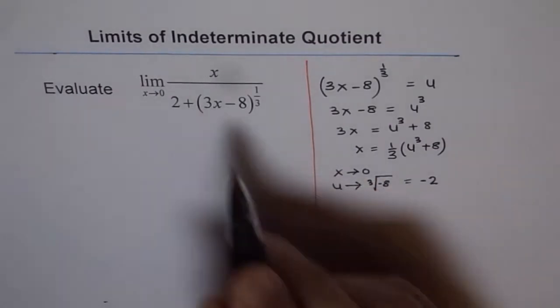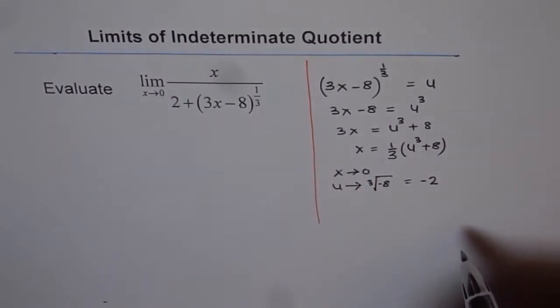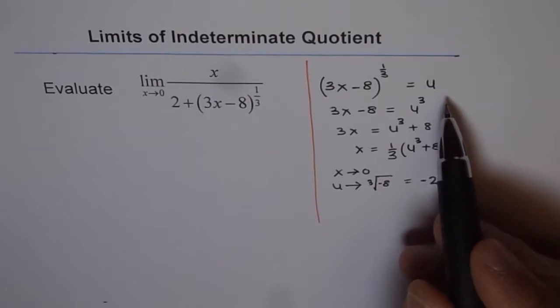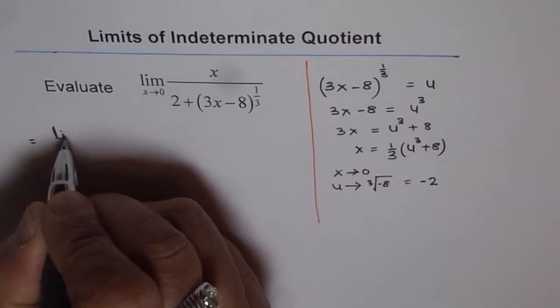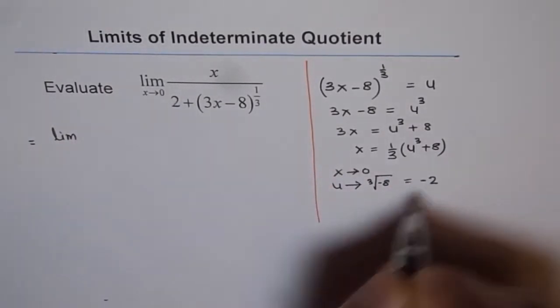So we will now rewrite our function in different variable. We will substitute u. So we have this function as limit u approaches minus 2.